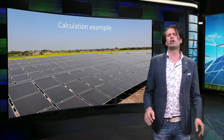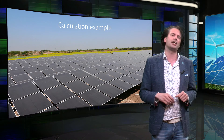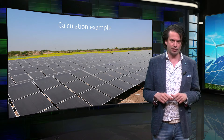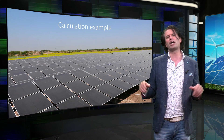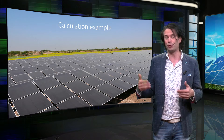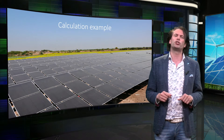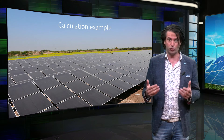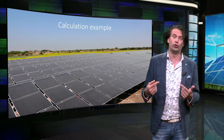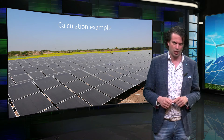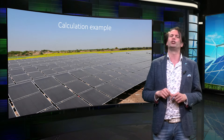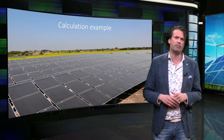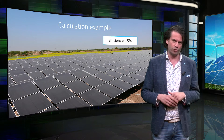Now we will work through an example of how to estimate the energy output of solar when actual output data is not available. With solar energy we are dependent on the sun. The efficiency of a solar module is expressed as how much of the sunlight received on the earth can be converted into usable electricity. Most commercially available solar modules have an efficiency nowadays between 10% and 25%, depending on the technology used.